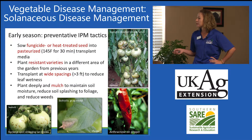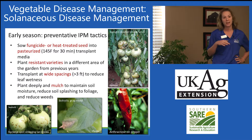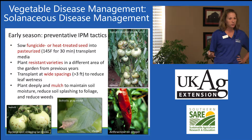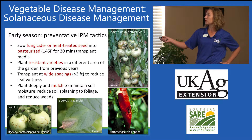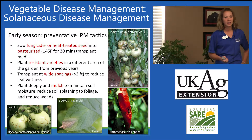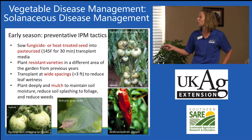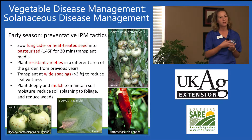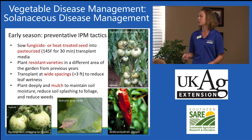Early in the season in terms of solanaceous disease management, growers and gardeners want to be thinking about sowing fungicide or heat-treated seed into pasteurized transplant media. Pasteurization is really easy to do in a home oven — it's basically just moistening your transplant media and then heating it uniformly to about 145°F. A simple meat thermometer can do that for you. You want to hold it at 145°F for 30 minutes, and that can eliminate some of these root rot pathogens, in particular Pythium, that can cause damping-off symptoms in vegetable transplants.